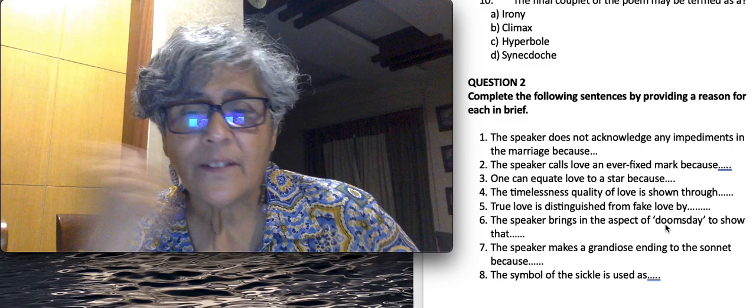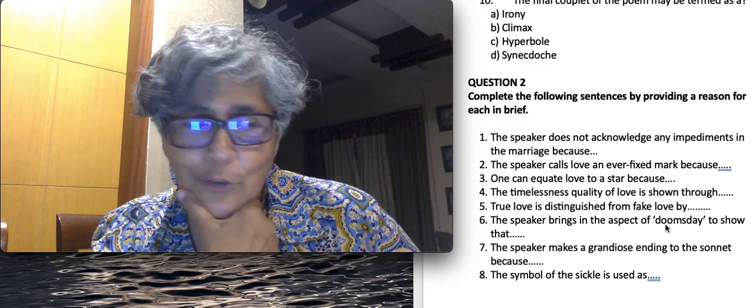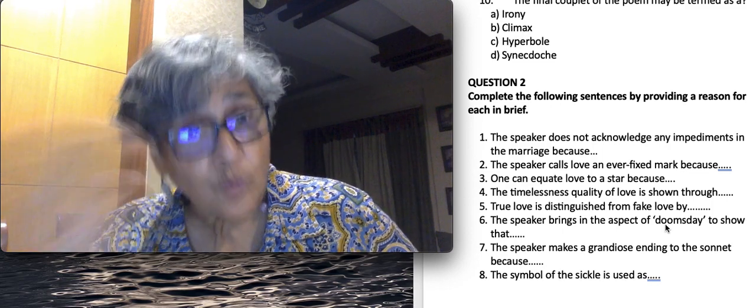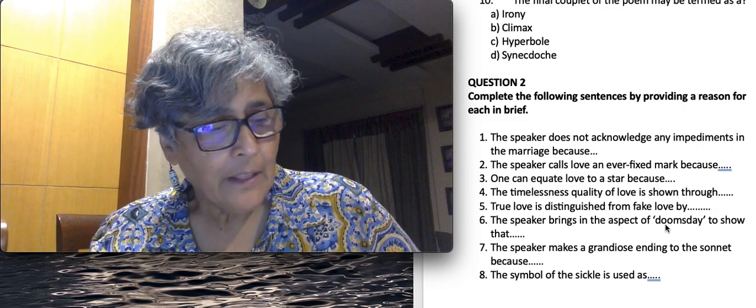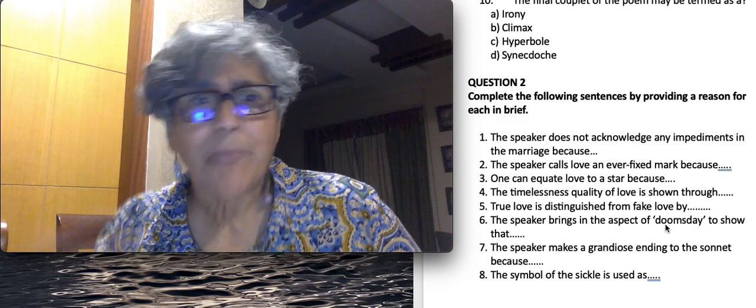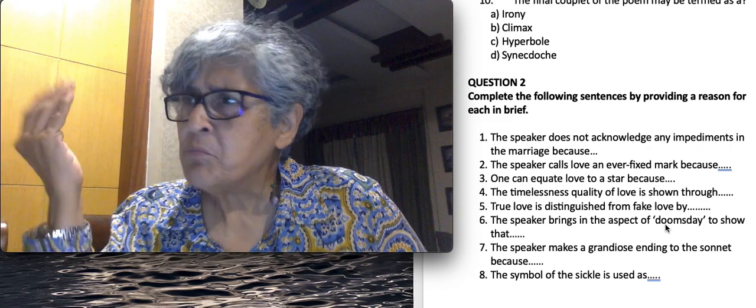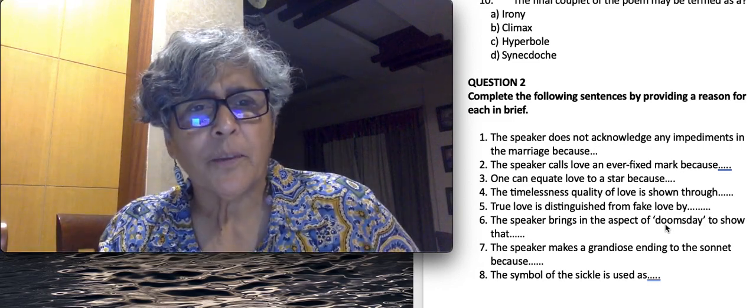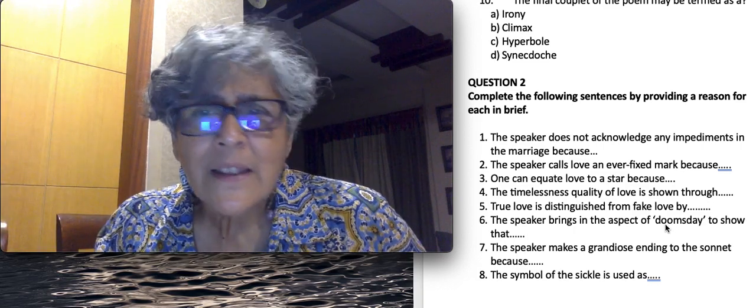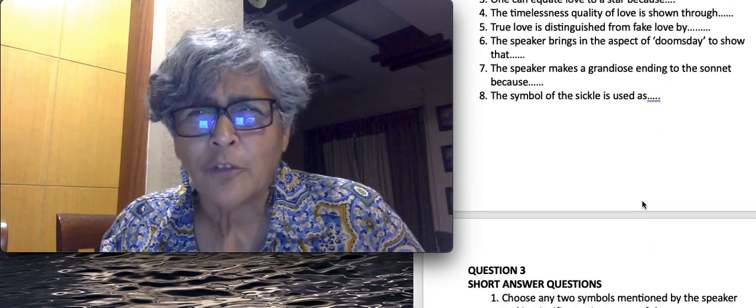The eighth one: the symbol of the sickle is used. The sickle is a tool used for threshing corn. The symbol of the sickle is used as a tool by time to transform the body with age and to make it barren. But love is unaffected by it. Love is immune to this kind of transformation. I've just given you two examples to give you a feel of how much you need to write.